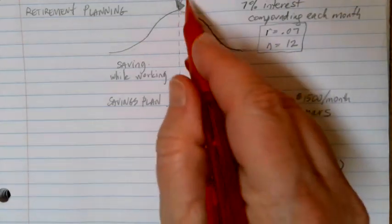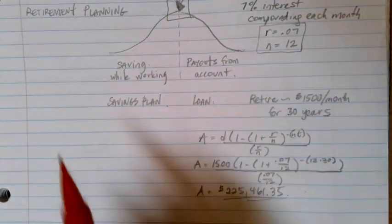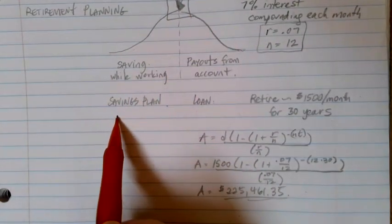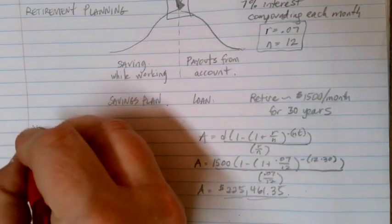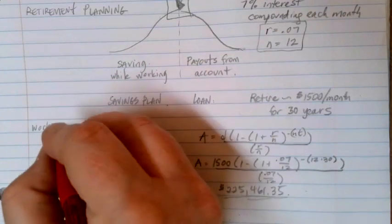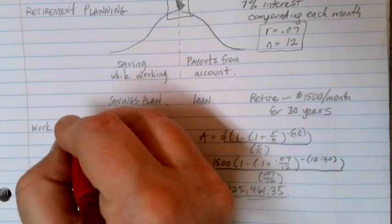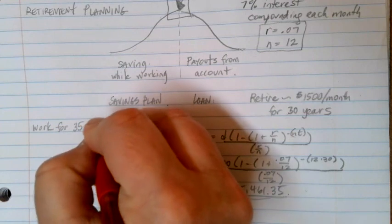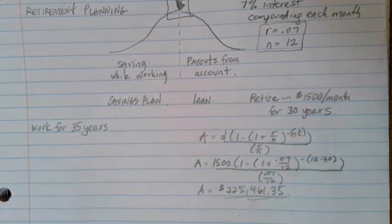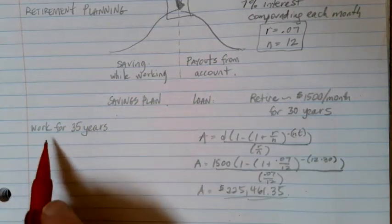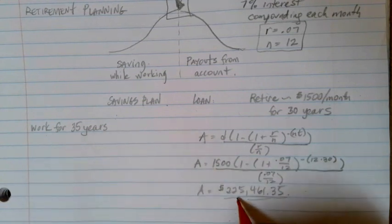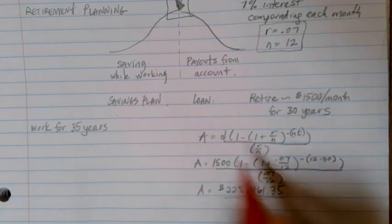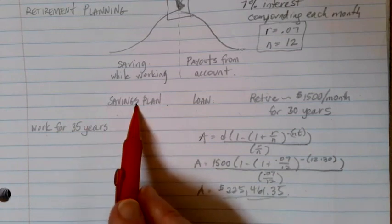All right. So this is how much I want to have here. My question then is, how much do I have to start saving every month in order to reach this? Well, let's suppose that I'm planning to work for 35 years before I retire. Well, in this case, if I'm going to be working for 35 years, and I want to have $225,000 at the end of that, I'm going to be using my savings plan formula.